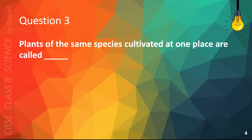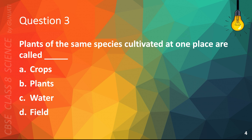Question 3. Plants of the same species cultivated at one place are called: A. Crops, B. Plants, C. Water, or D. Field. The correct answer is A. Crops.